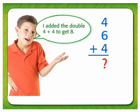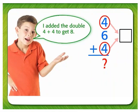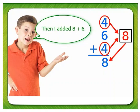To find the sum, add the double 4 plus 4 to get 8. Now add 8 plus 6. 8 plus 6 is 14.